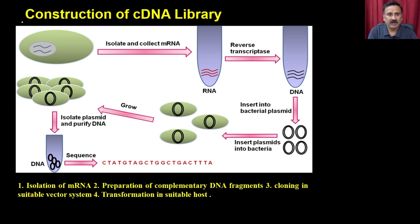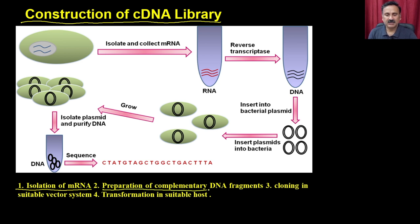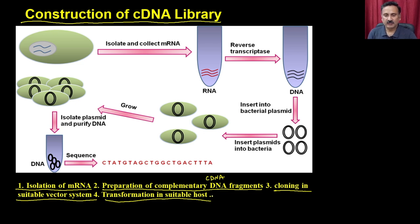The construction of the cDNA library is a multi-step process. Step 1 is isolation of messenger RNA. Step 2 is preparation of complementary DNA (cDNA). Step 3 is cloning into a suitable vector system. Step 4 is transformation into a suitable host to prepare the cDNA library — a collection of clones showing the expression status of that particular cell.